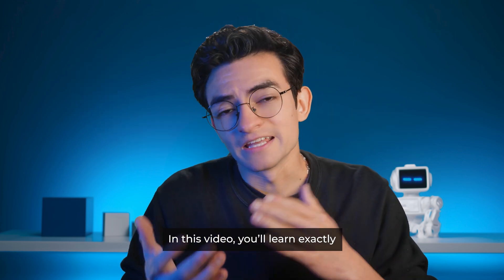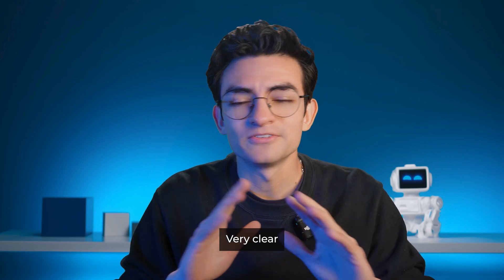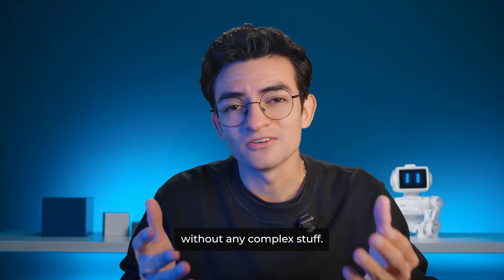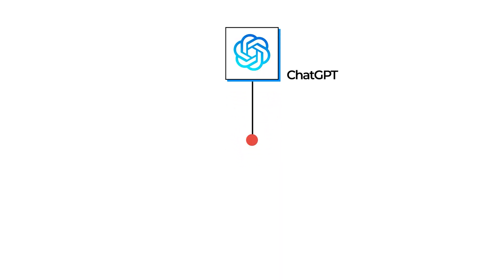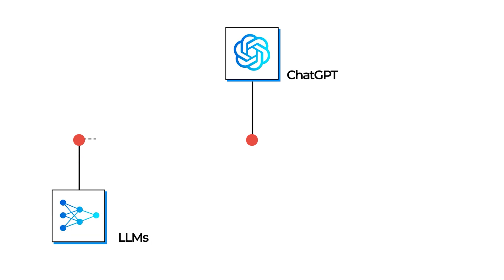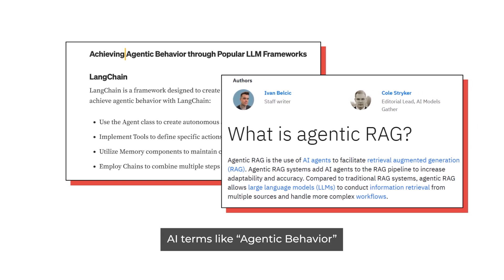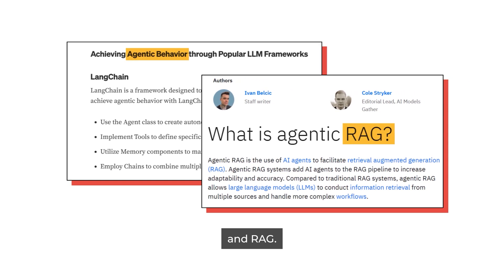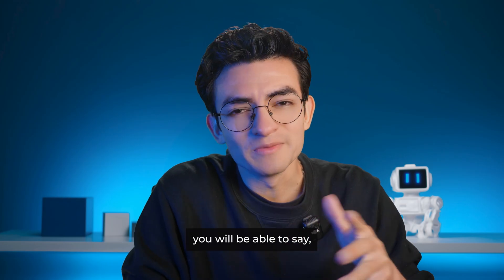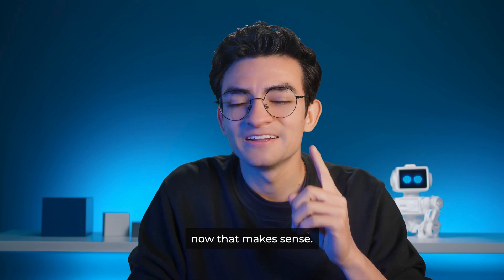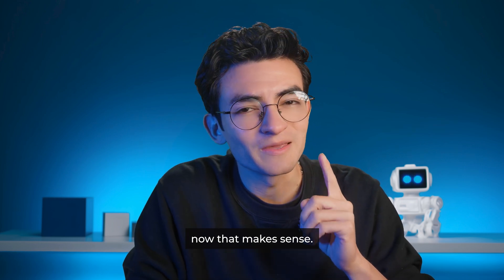In this video, you will learn exactly what an AI agent is — very clear, without any complex stuff. We will start from things you already know, like ChatGPT, then large language models, and finally connect the dots to understand AI agents. We will also clarify some popular AI terms, like agentic behavior and RAG. By the end, you will be able to say: now that makes sense.